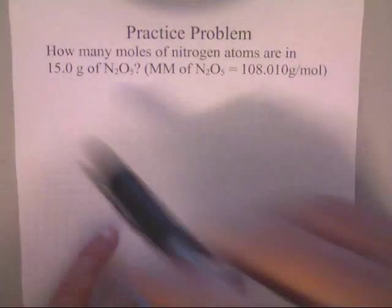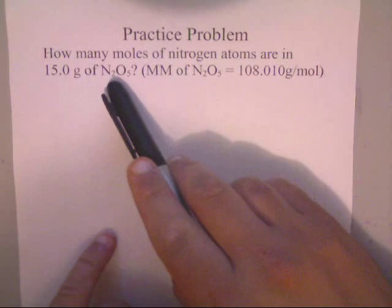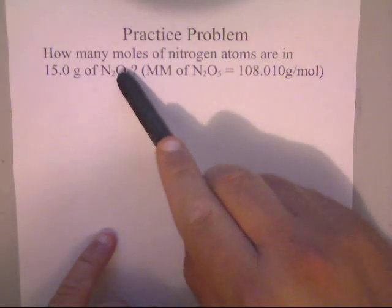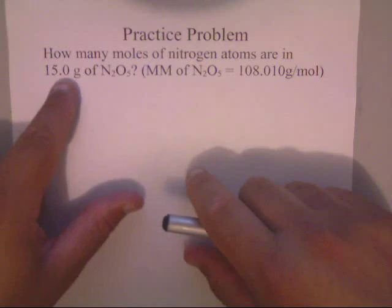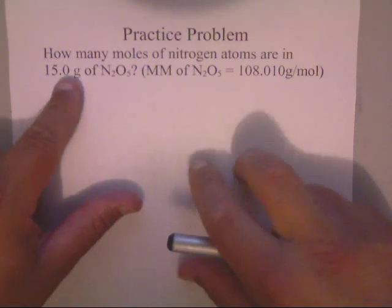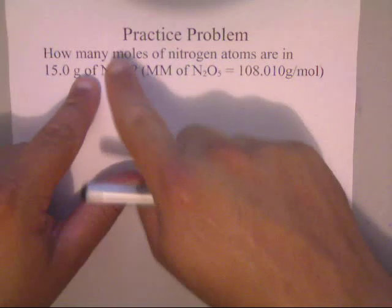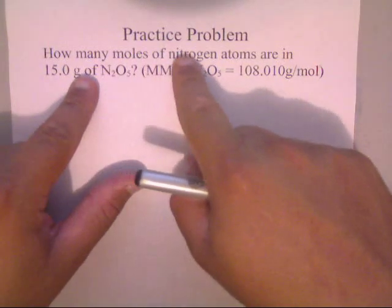Alright, in this video I'm going to show you how to take 15 grams of a molecular compound, which this molecular compound is dinitrogen pentaoxide, and I'm going to show you how to go from grams of this, which is grams of the entire compound, to just moles of the nitrogen atoms.